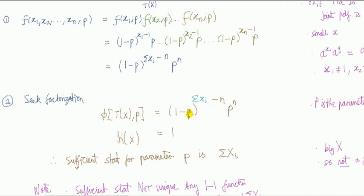So then we look into this part of the function and look at where the x's are. Well, it's over here. And we see the function of x's is the sum of them. So that is the sufficient statistic.